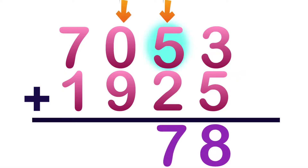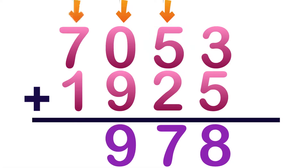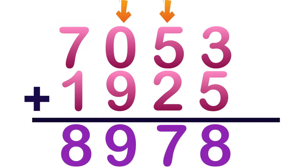How about 0 plus 9? Always remember, children: any number that you add by 0, the answer is the number itself. So, 0 plus 9 is equal to 9. How about 7 plus 1? 7 on your mind: 7, 8. So, the answer is 8,978.